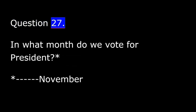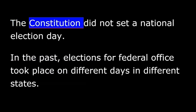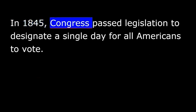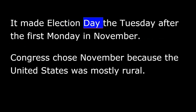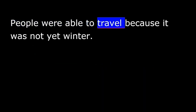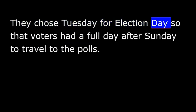Question 27. In what month do we vote for president? November. The Constitution did not set a national election day. In the past, elections for federal office took place on different days in different states. In 1845, Congress passed legislation to designate a single day for all Americans to vote. It made election day the Tuesday after the first Monday in November. Congress chose November because the United States was mostly rural. By November, farmers had completed their harvest and were available to vote. Another reason for this date was the weather. People were able to travel because it was not yet winter. They chose Tuesday for election day so that voters had a full day after Sunday to travel to the polls.